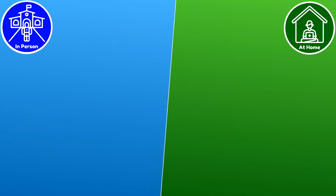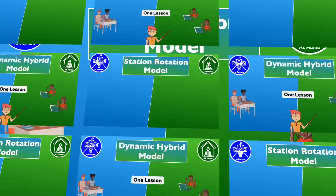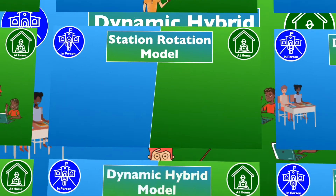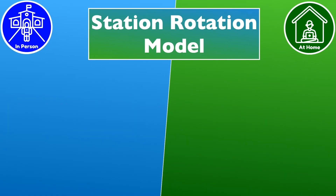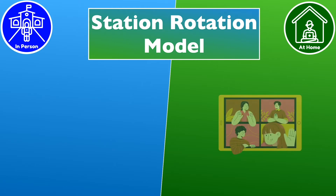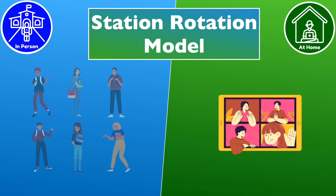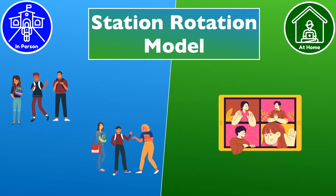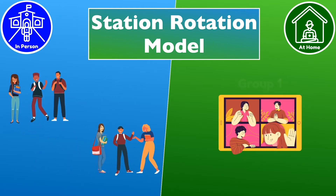Author Catlin Tucker shared a great adaptation of the station rotation model for hybrid learning. In this model, students at home would participate synchronously with students in class. Teachers split the students into groups, with the first group consisting of students who are joining class virtually at home. In-person students are divided into the other two groups.